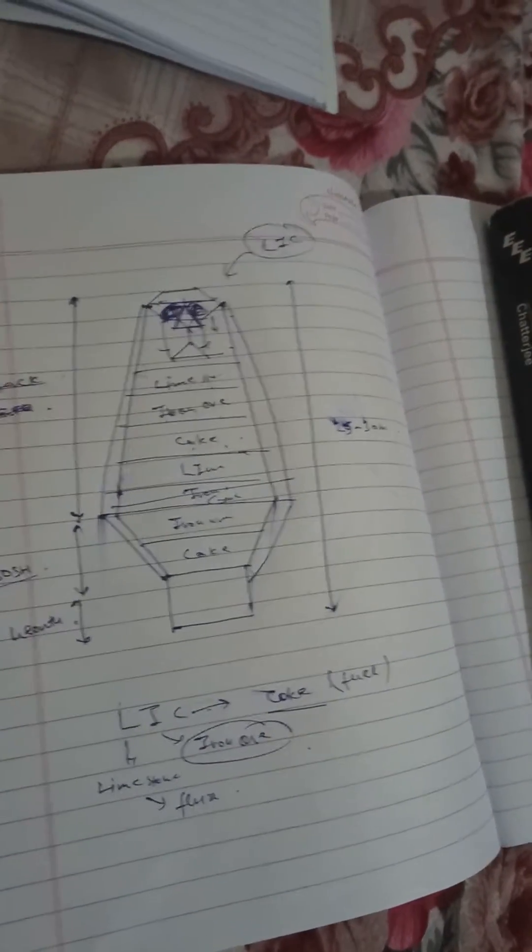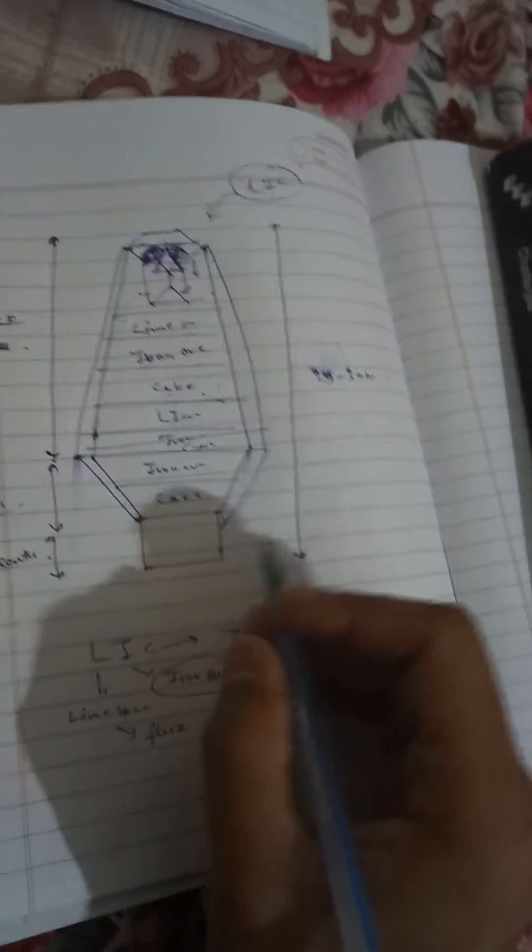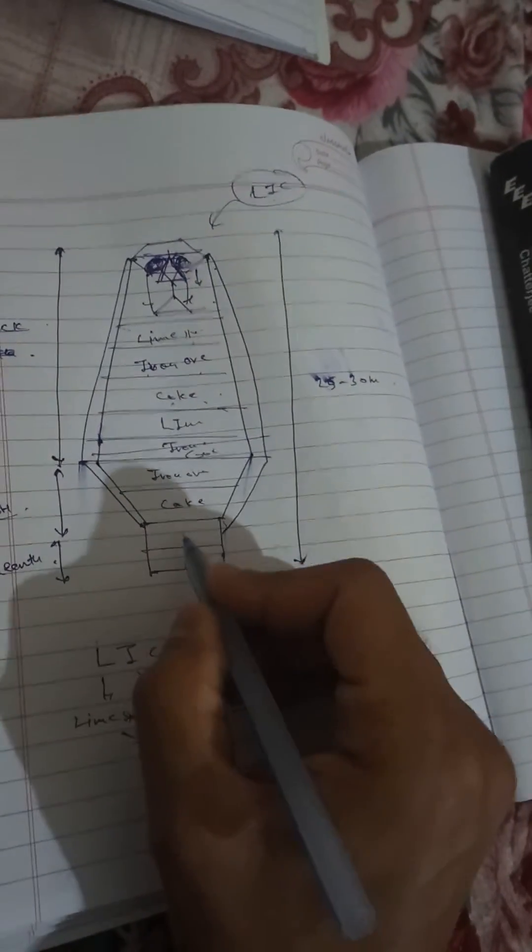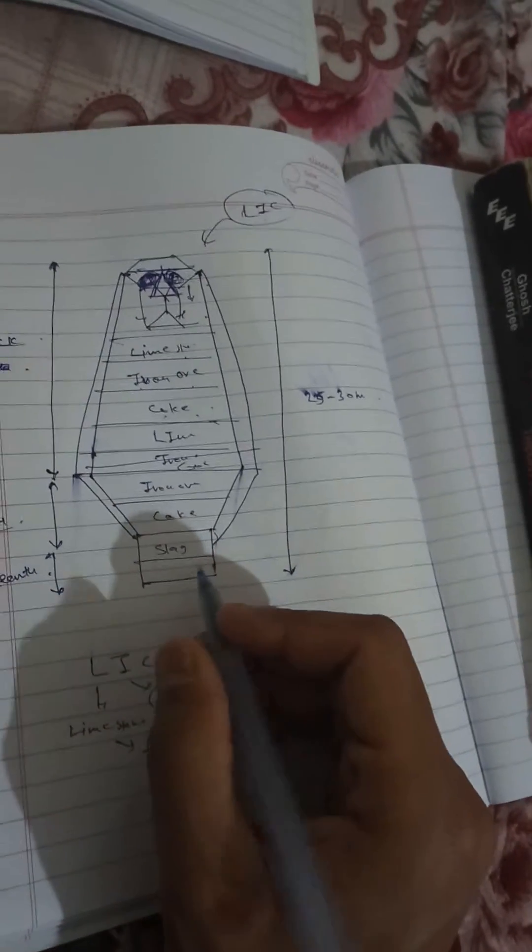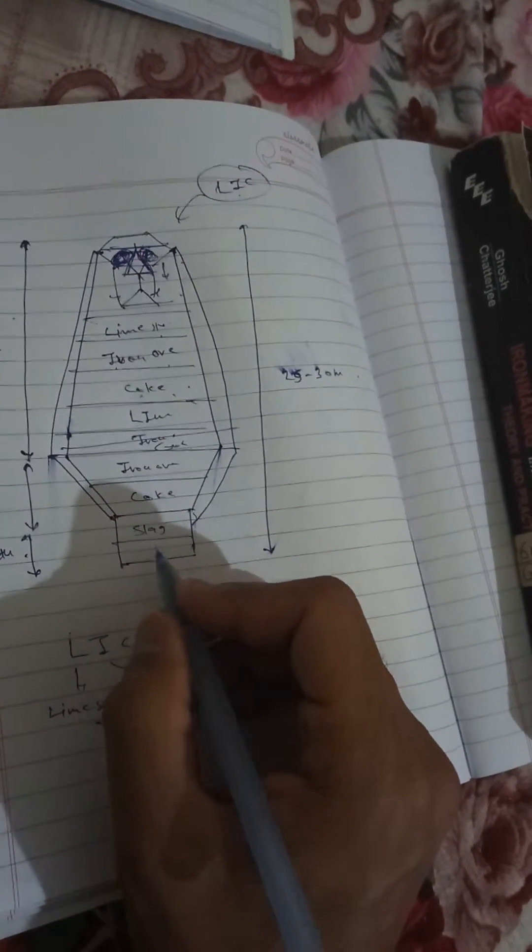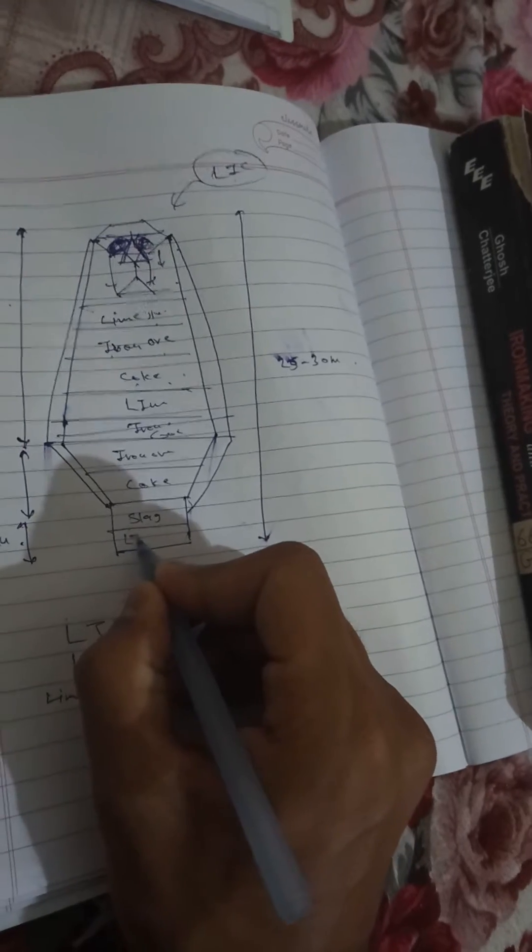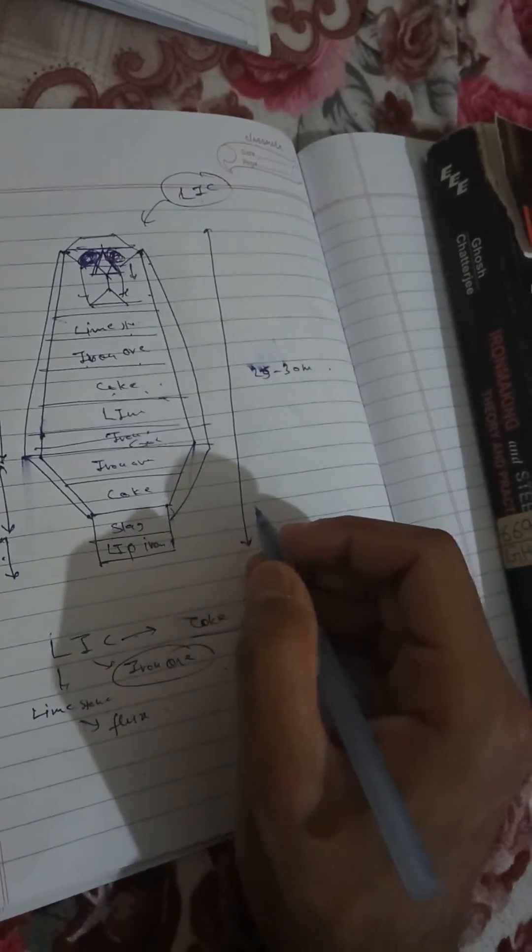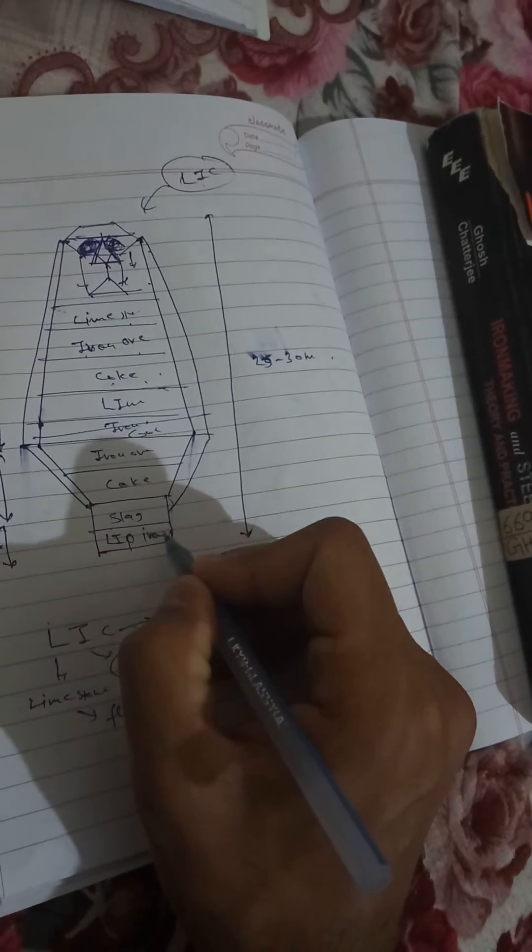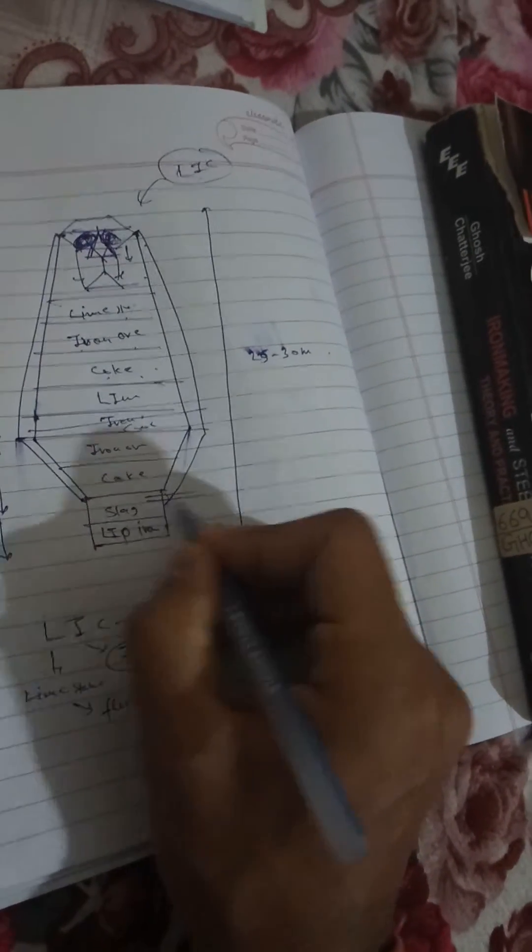As iron is formed at the bottom in the hearth, there are two layers. The upper layer is of slag and the lower layer is of liquid iron.